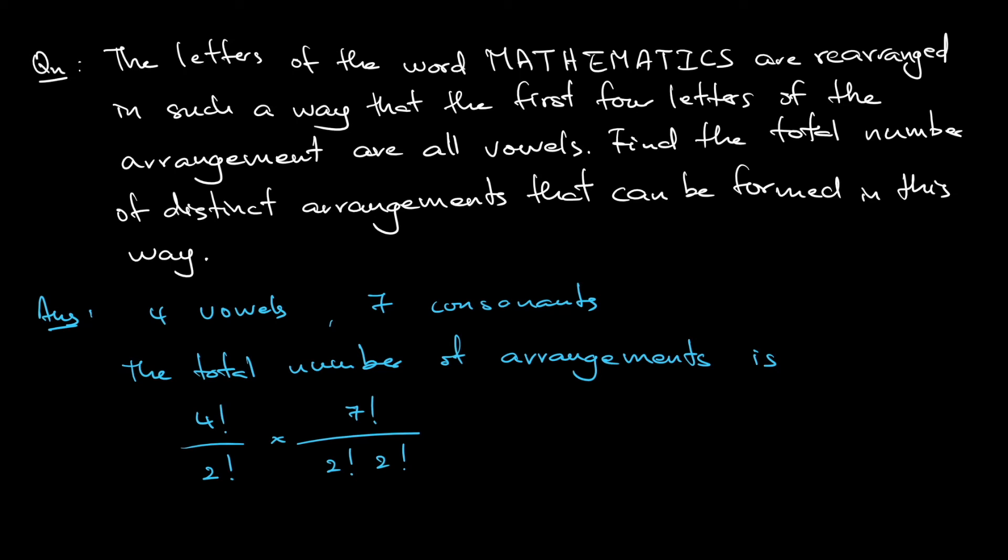So 4 factorial divided by 2 factorial is 24 divided by 2, which is 12. 7 factorial divided by 4 is 1260. Multiply this together, you get 15,120.